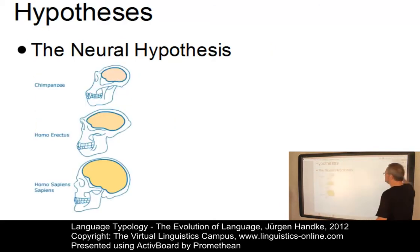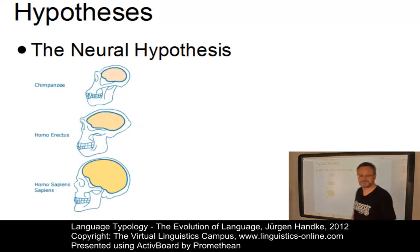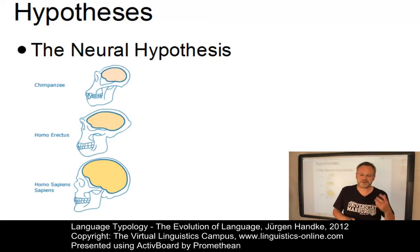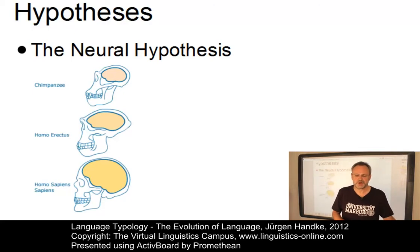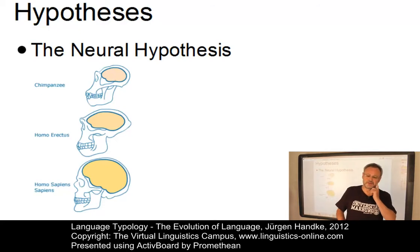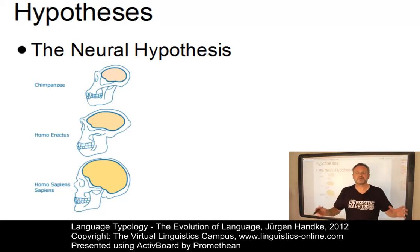The neural hypothesis holds that language resulted from a gradual increase in general intelligence, documented by an increase in brain volume, and thus an increase in the precision of the wiring of the neural network.